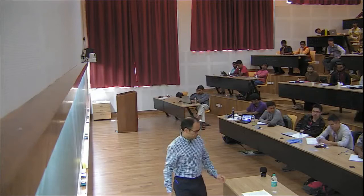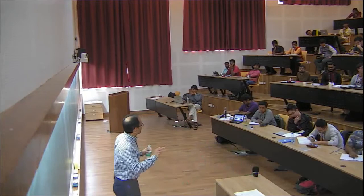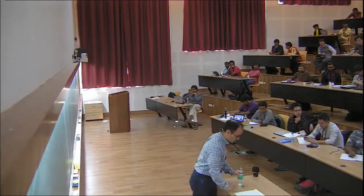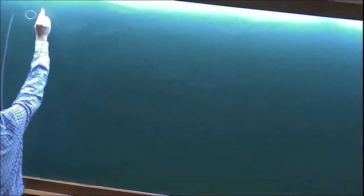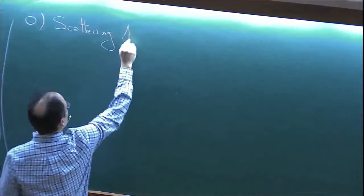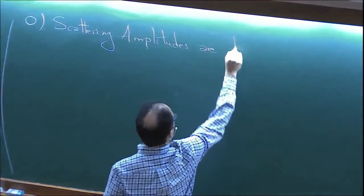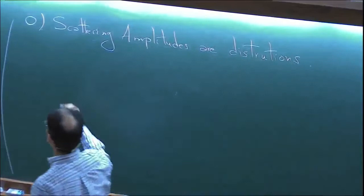Let's start with the topic: kinematic variables. We're not going to do anything complicated today. We start with the observation — this is point zero — that scattering amplitudes are distributions. When we try to compute the scattering amplitude of scalar particles, gluons, gravitons, or any kind of particle, the amplitude has to do something special.